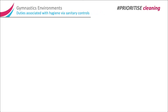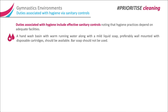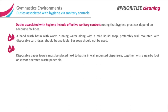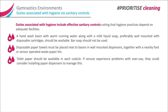Duties associated with hygiene via sanitary controls. Duties associated with hygiene include effective sanitary controls, noting that hygiene practices depend on adequate facilities. A hand wash basin with warm running water, along with a mild liquid soap — preferably wall-mounted with disposable cartridges — should be available; bar soap should not be used. Disposable paper towels must be placed next to basins in wall-mounted dispensers, together with a nearby foot or sensor-operated waste paper bin. Toilet paper should be available in each cubicle; if venues experience problems with overuse, they could consider installing paper dispensers to manage this.